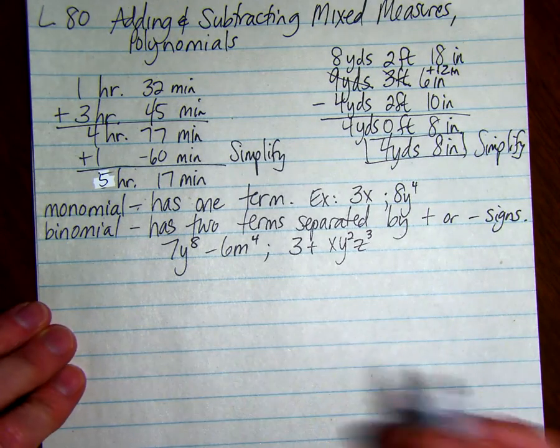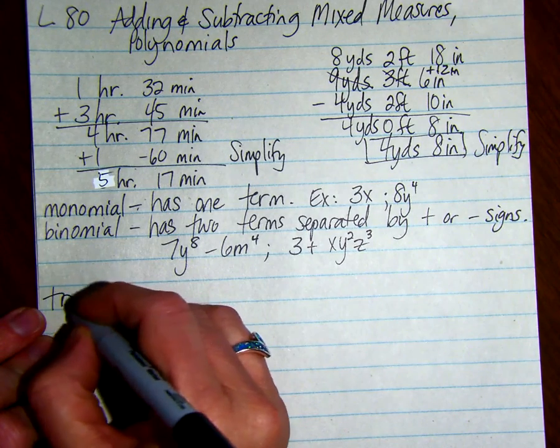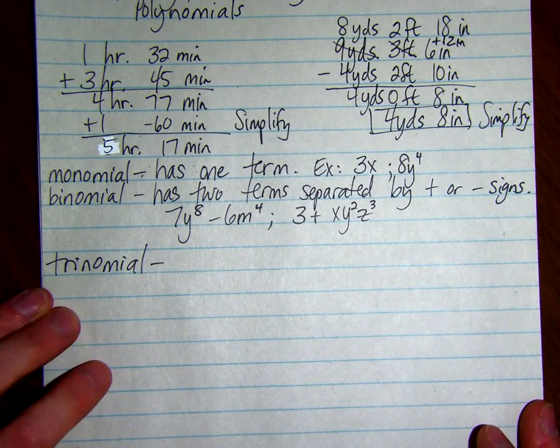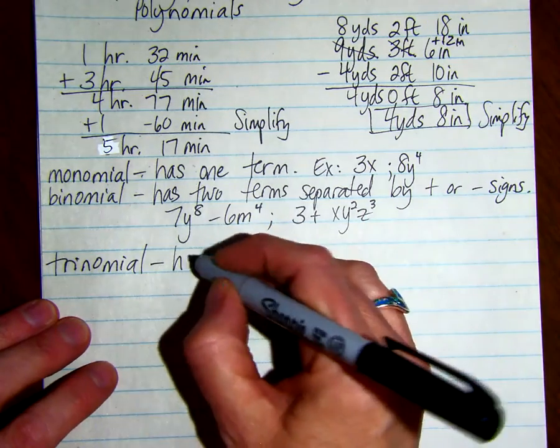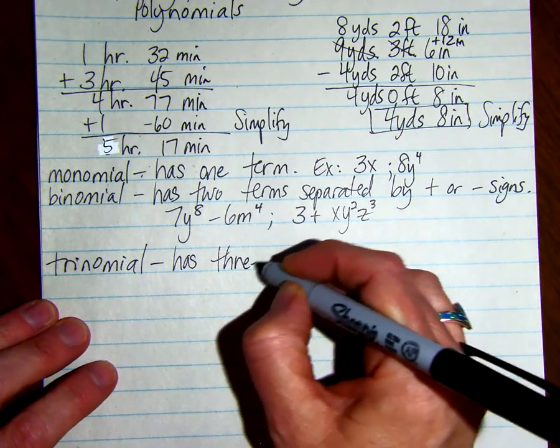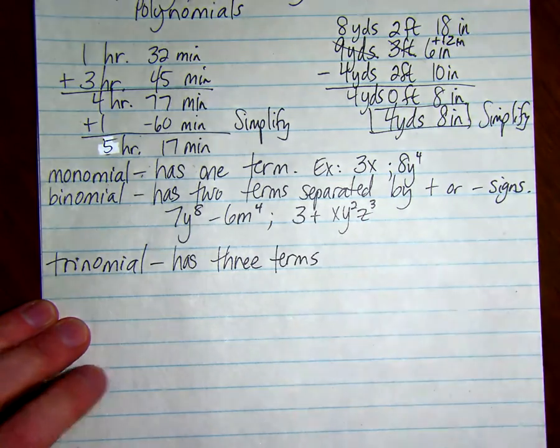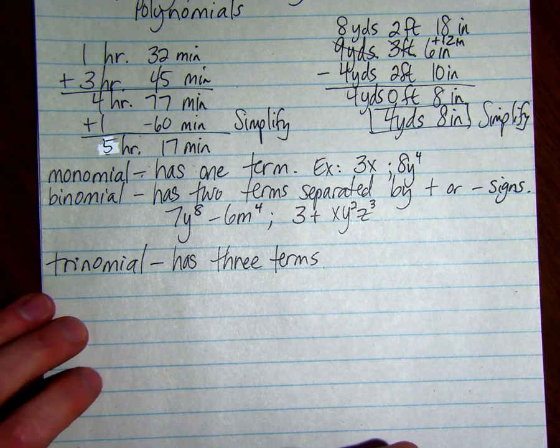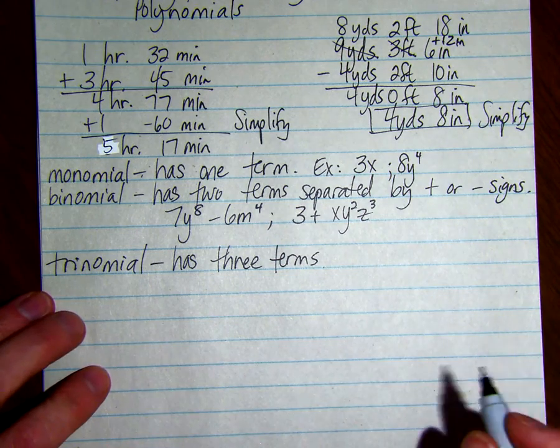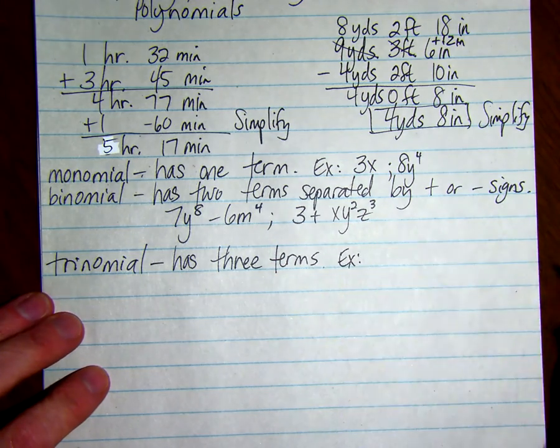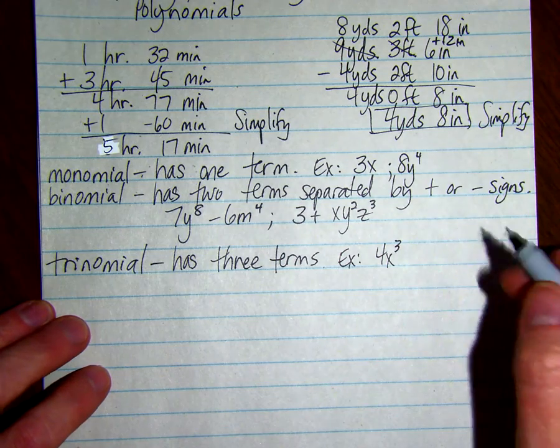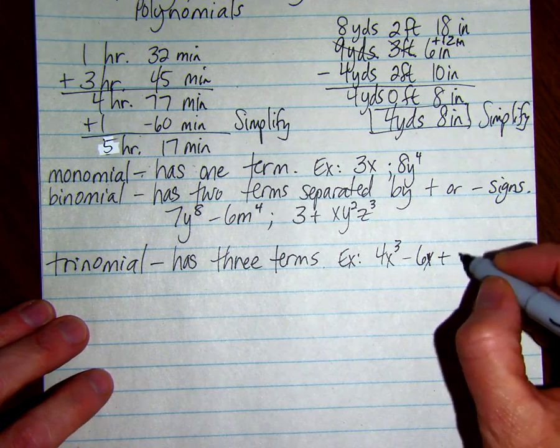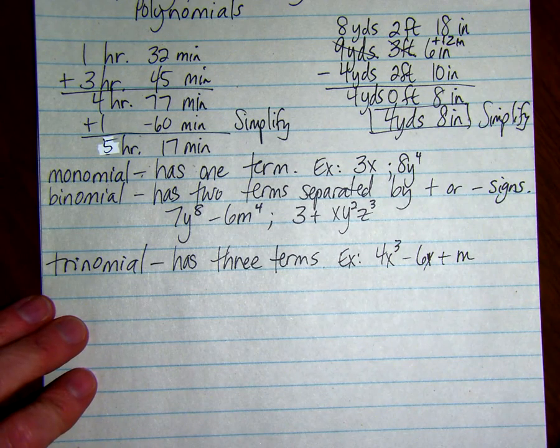And then we have a trinomial. A trinomial has three terms. Here's an example of a trinomial: 4x cubed minus 6x plus n. That's a trinomial.